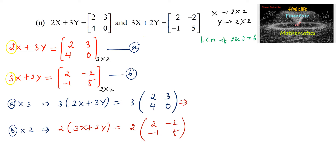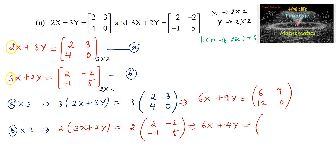This gives equation C: 6X plus 9Y equals [6, 9; 12, 0] — since 3×2=6, 3×3=9, 3×4=12, 3×0=0. And equation D: 6X plus 4Y equals [4, -4; -2, 10] — since 2×2=4, 2×(−2)=−4, 2×(−1)=−2, and 2×5=10.